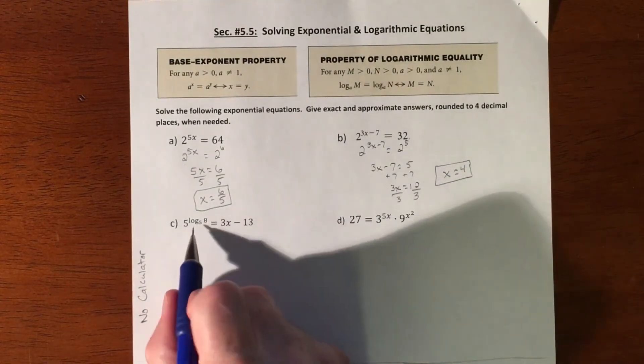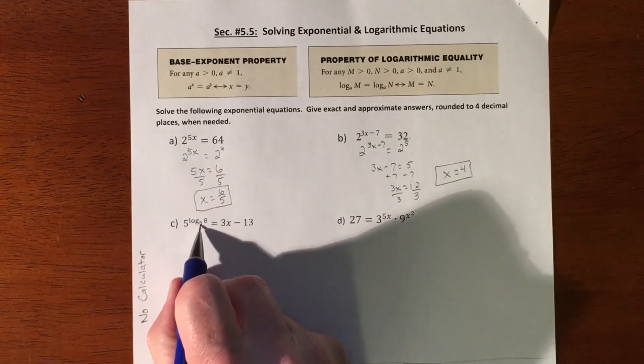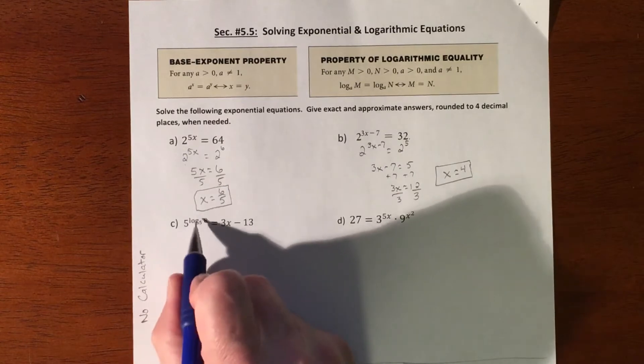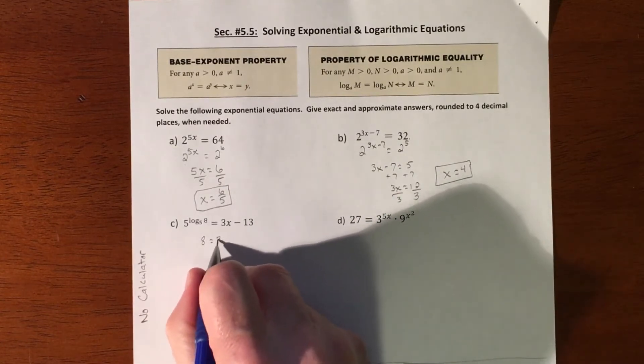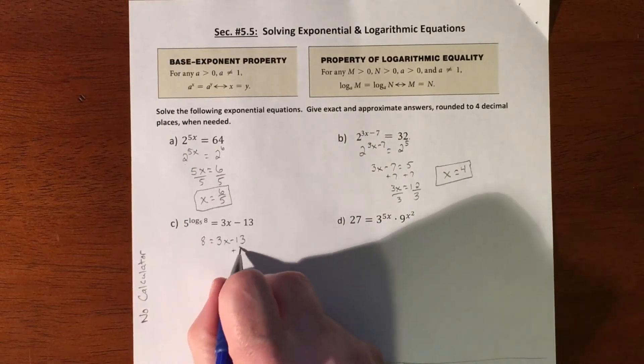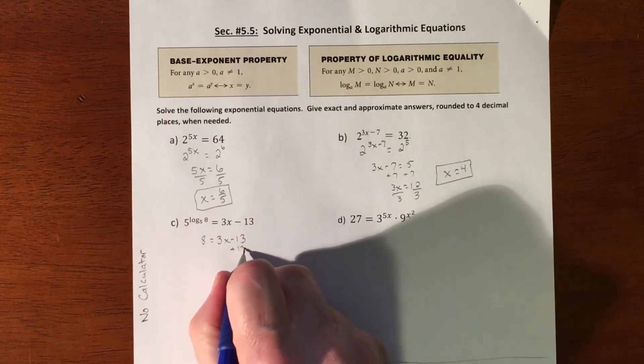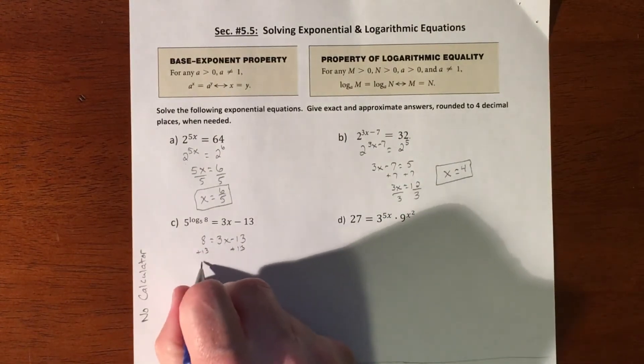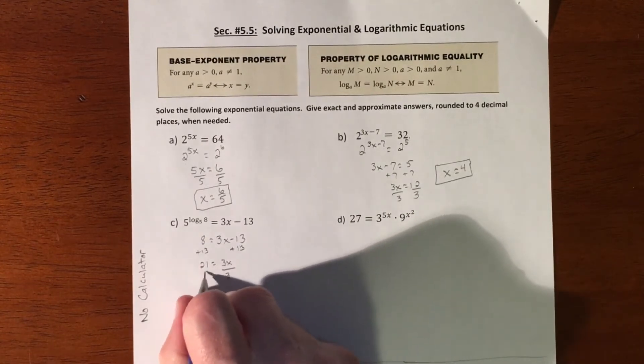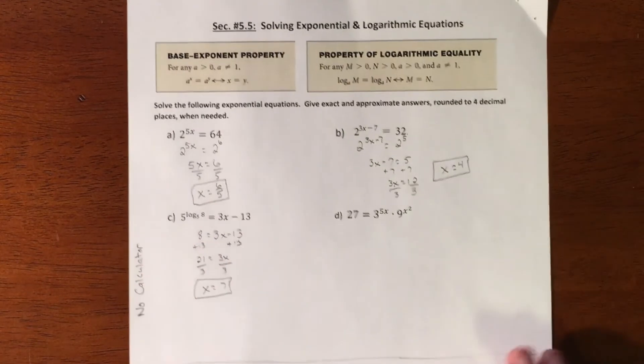All right, and now this one's a little bit different. This is kind of a weird ugly looking piece, but the fact that the log base matches the exponential base, basically this whole thing just simplifies to 8. And then it just becomes a very nice straightforward problem, so we'll add 13 to both sides. So that gets us 21 equal to 3x, divide by 3, and x is going to equal 7.